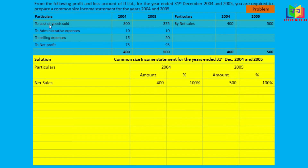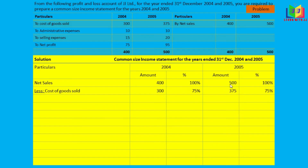The next item is cost of goods sold: 300 for 2004 and 375 for 2005. For 2004: 300 divided by 400 gives 75%. For 2005: 375 divided by 500 also gives 75%. So the cost of goods sold is 75% of sales in both years.